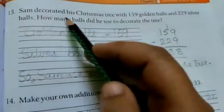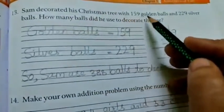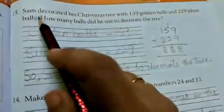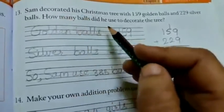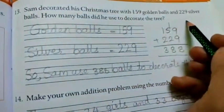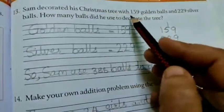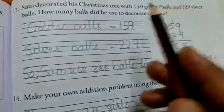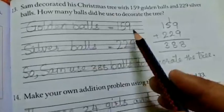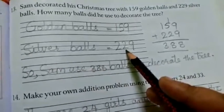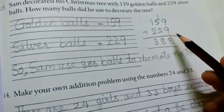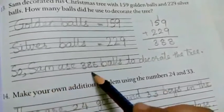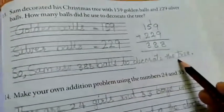Now 13th one. Sam decorated his Christmas tree with 159 golden balls and 229 silver balls. How many balls did he use to decorate the tree? Sam decorated Christmas tree, 159 golden balls, 229 silver balls. So golden balls is equal to 159, silver ball is equal to 229. So when you are going to add you will get 388. So Sam used 388 balls to decorate the tree.